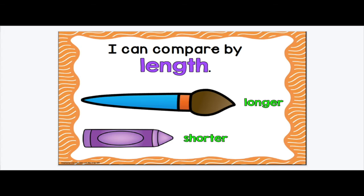I can also measure by length. That means how long something is. If you lie something down and see how long it is. So we have longer paintbrush and a shorter crayon.